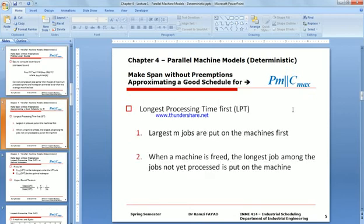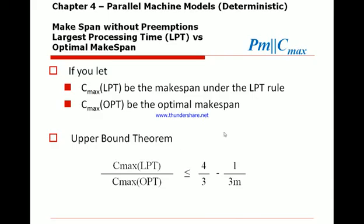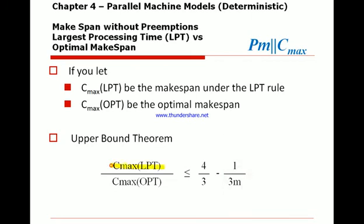So we're gonna find the lower bound, but I'm gonna consider just to show you how does it work. So we could find the make span which is c max. Let's make it bigger. So we have here, this is c max, largest processing time versus optimal make span.